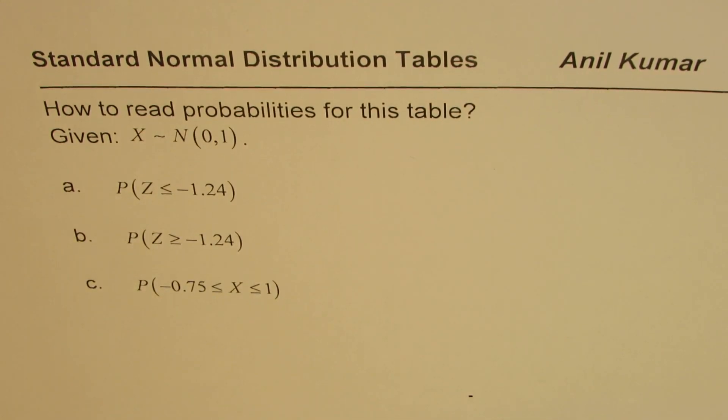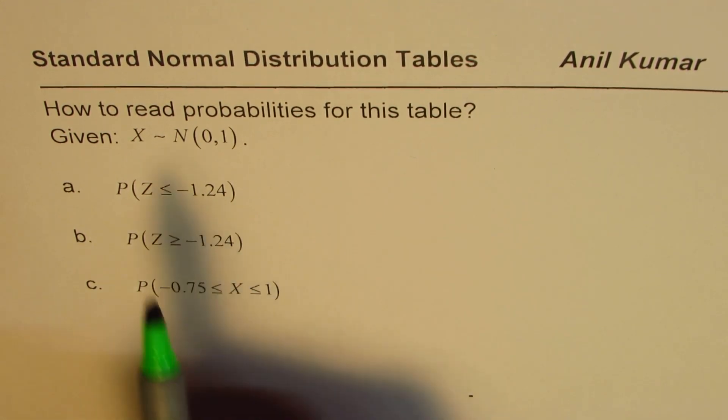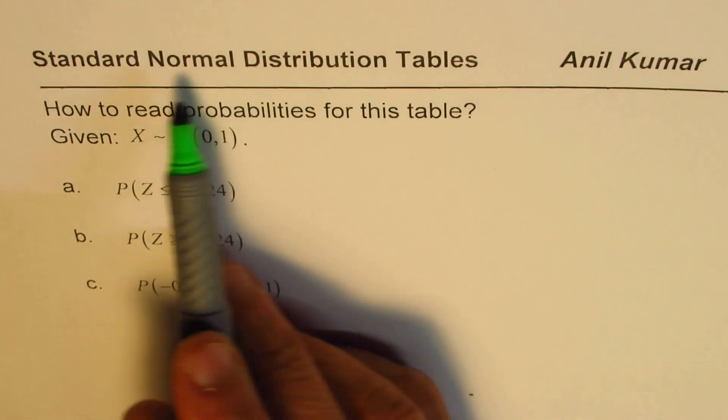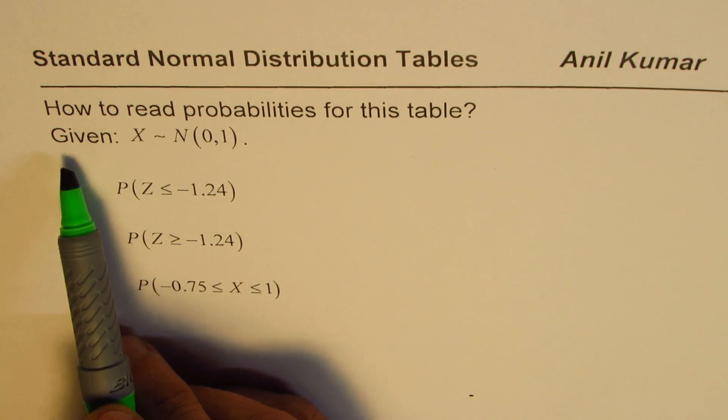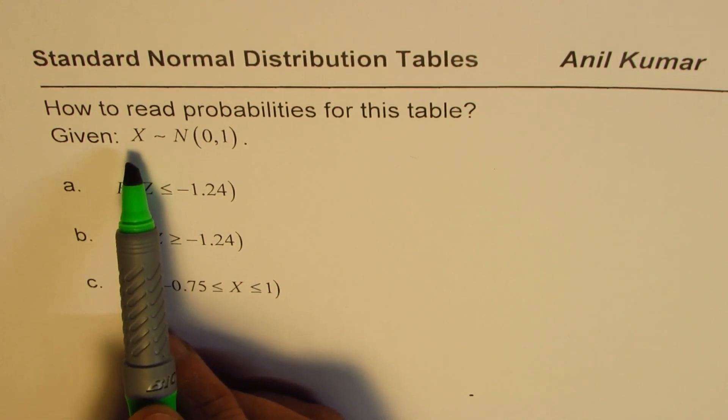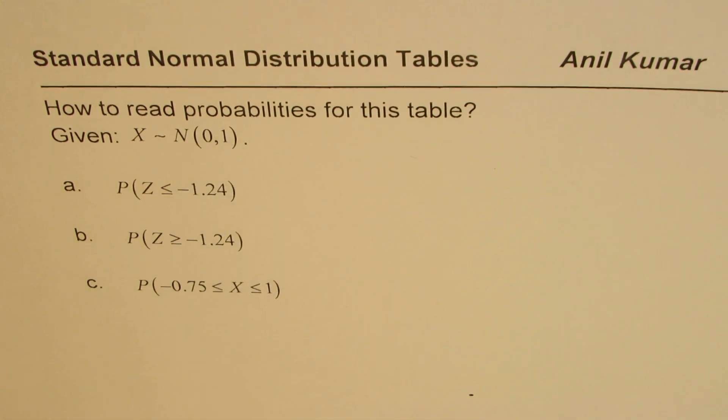I'm Anil Kumar, and in this video we will learn simple steps to read the values from a standard normal distribution table. The question here is how to read probabilities from this standard normal distribution table? We are given x as a random variable which follows normal distribution where the mean is 0 and standard deviation or the variance is 1.